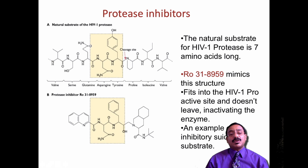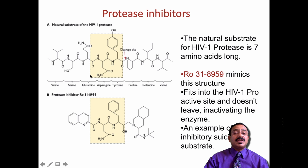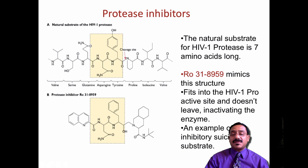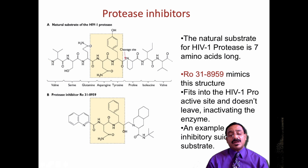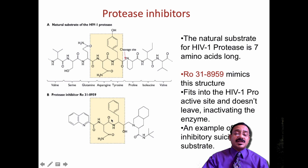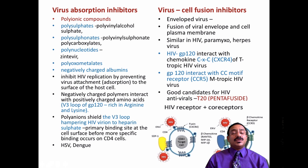The protease inhibitors: shown here is the natural substrate for HIV protease versus the protease inhibitor drug. The difference is in a specific area where instead of a simple oxygen linkage, there is an OH group added — creating a cleavage site. This structure mimics the natural substrate and fits into the HIV protease active site but doesn't leave. This is a good example of a suicide inhibitor — the substrate goes inside, replaces the natural substrate, and fakes the system so there is no proper substrate for HIV-1 protease to act upon.